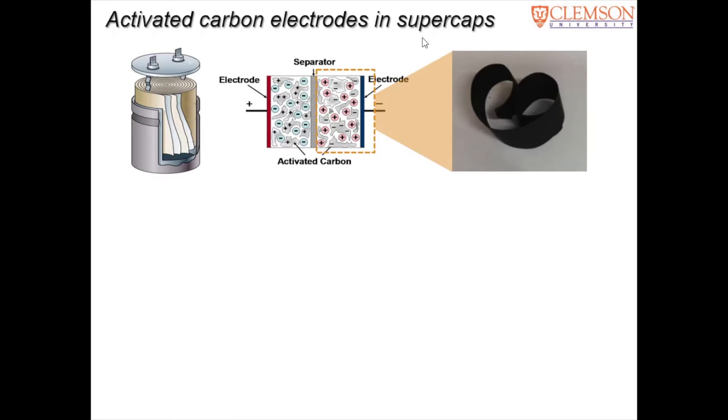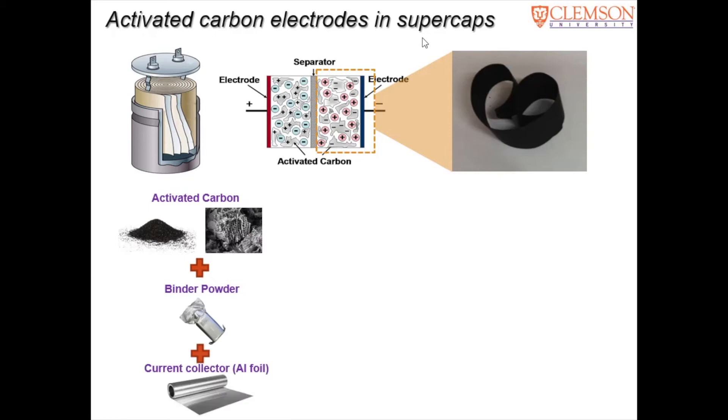An electrode in such a capacitor is made by mixing some sort of a carbon material, a nanocarbon or activated carbon with binders like butyl rubber or PTFE, Teflon, and pasting them on an aluminum foil current collector.